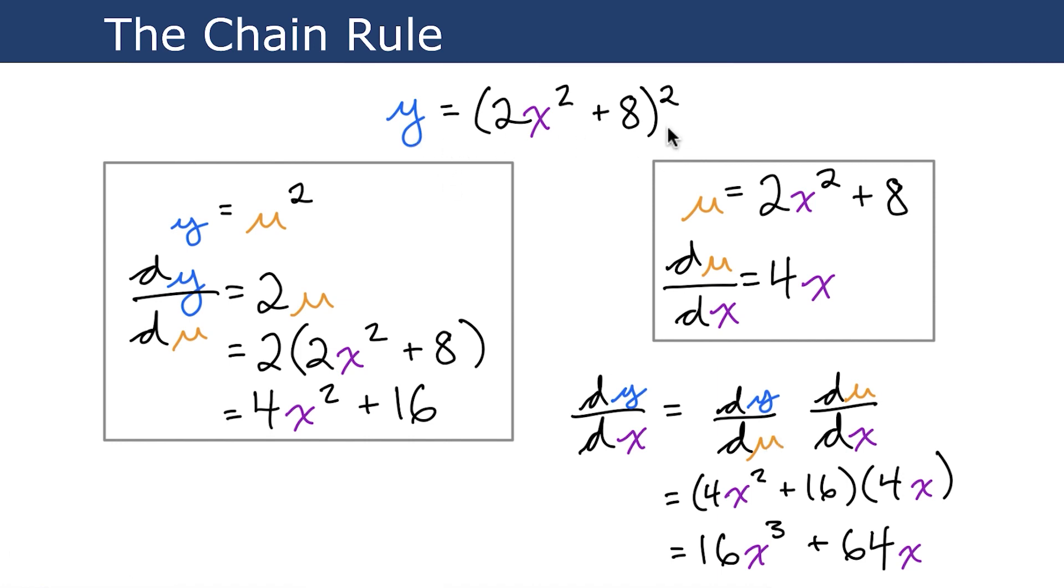All right, so let's say we have this function here where y = (2x² + 8)². According to what I showed you on the preceding slide, we can break this up into two nested functions. So the inner function, we can set that equal to u, so u = 2x² + 8. And then the outer function is simply y = u².